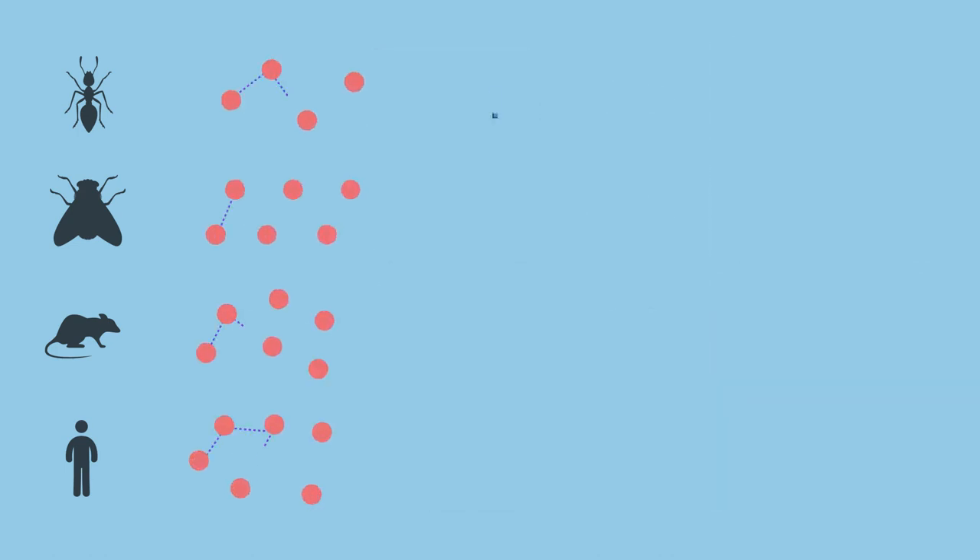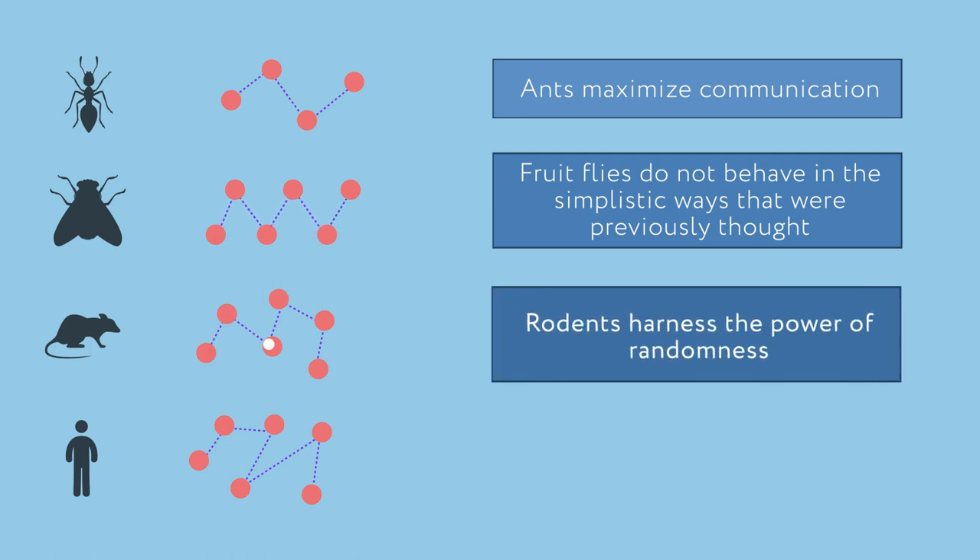Our conceptual framework unveils evidence supporting these mechanisms of cognition. We have shown that landmark experiments on animals can be confirmed by simply quantifying the complexity of behavioral time series from different studies. For example, ants maximize communication efficiency as a function of sequence complexity. Fruit flies do not behave in the simplistic ways that were previously thought. Rodents harness the power of randomness when outsmarted by artificial intelligence. And humans are most creative at generating randomness when they reach age 25.